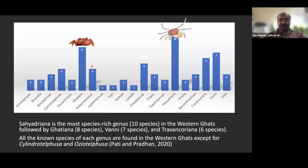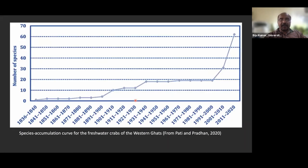Looking at species diversity by genus: Sahyadriana leads with 10 species, followed by Gatiana with 8, and Vanni with 7. Some genera are represented by a single species — Inglethelphusa, Kani, and Lamella each have only one species.